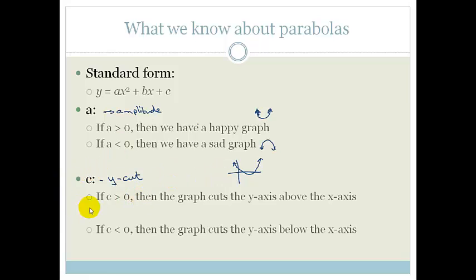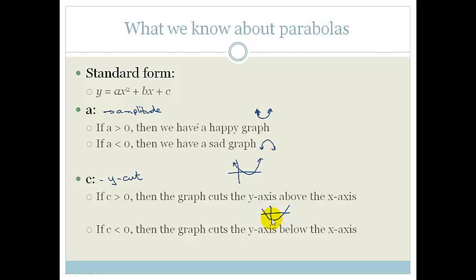Or if c is smaller than 0 then the graph cuts the y-axis below the x-axis. So if I draw this again with the y-axis, the graph looks something like this — cutting below the x-axis — therefore c would be smaller than 0.